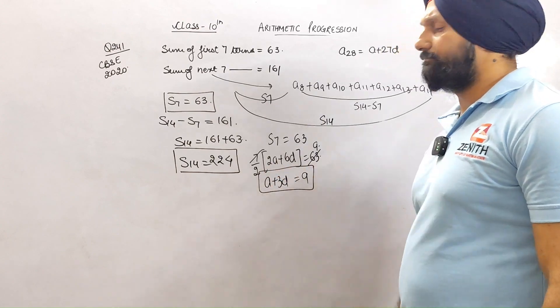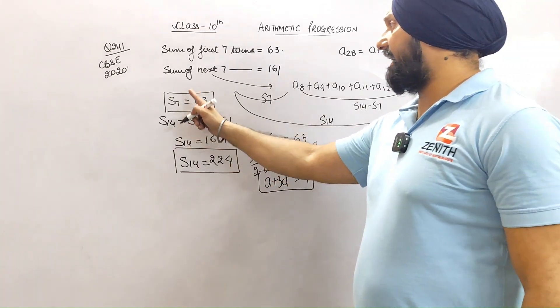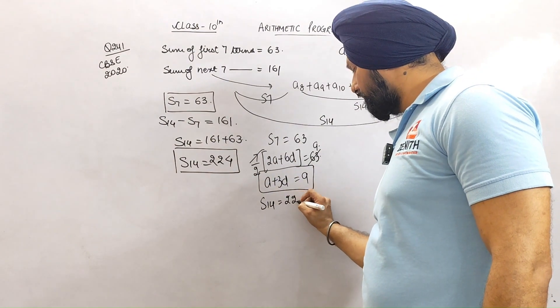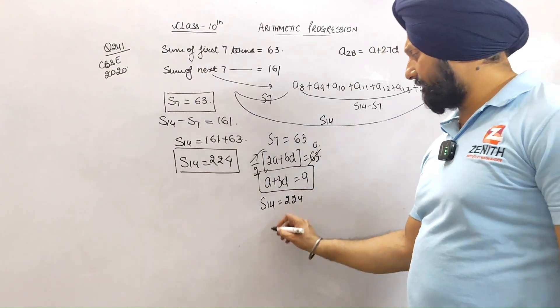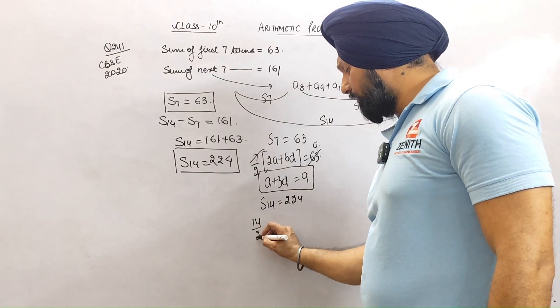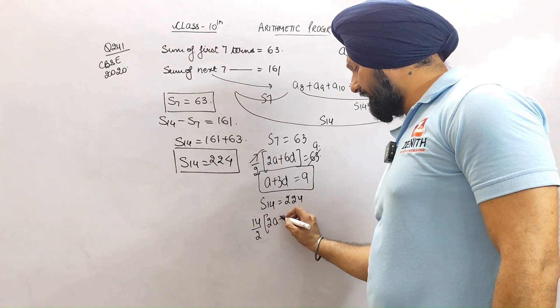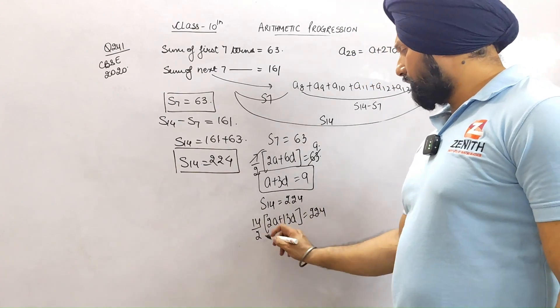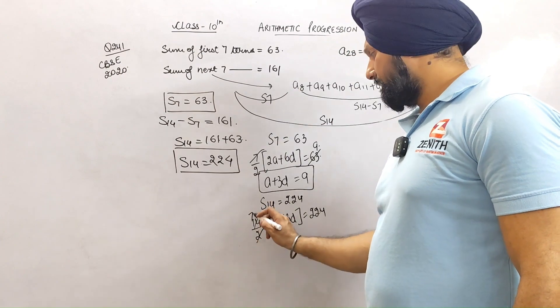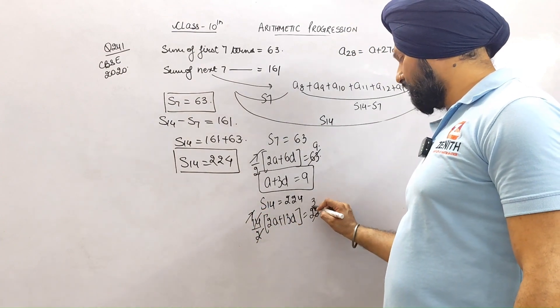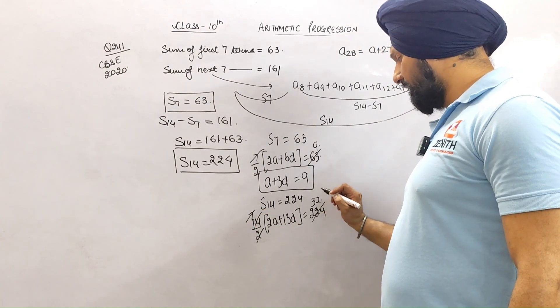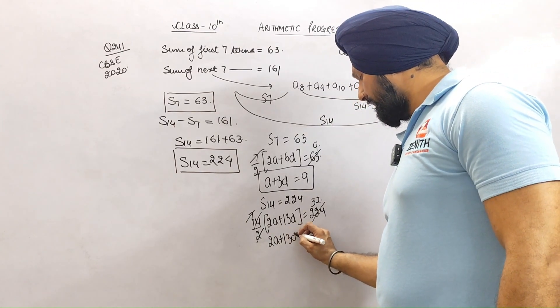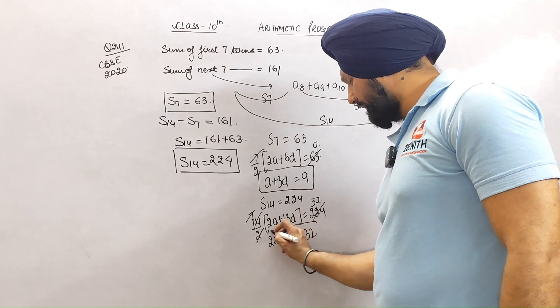Now let's talk about S14. S14 is 224. What does S14 mean? 14/2 times (2a + 13d) = 224. Two sevens are 14, so 7(2a + 13d) = 224. Divide by 7, 224 ÷ 7 = 32. So 2a + 13d = 32.